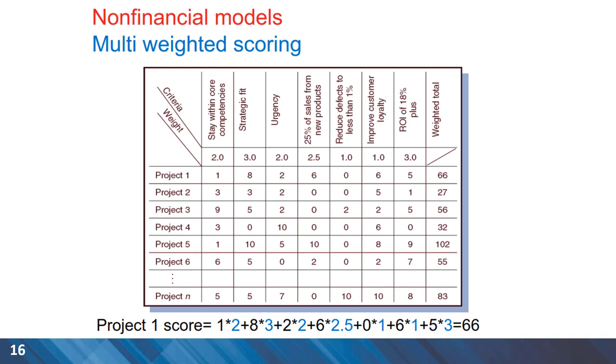So at the end, we can calculate the total score for each project alternative. For Project 1, as an example, the weighted total value is 66, and we can see that Project 5 has a significantly higher value of 102. So we can give priority to higher weighted total for different project alternatives.